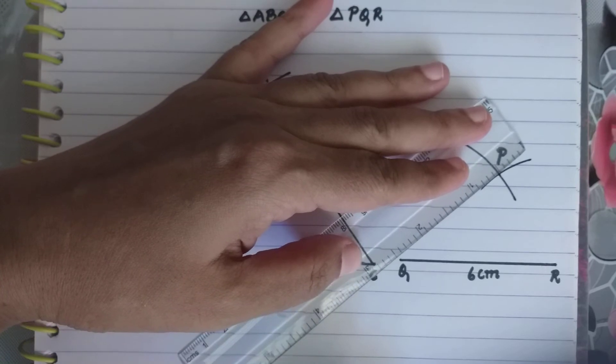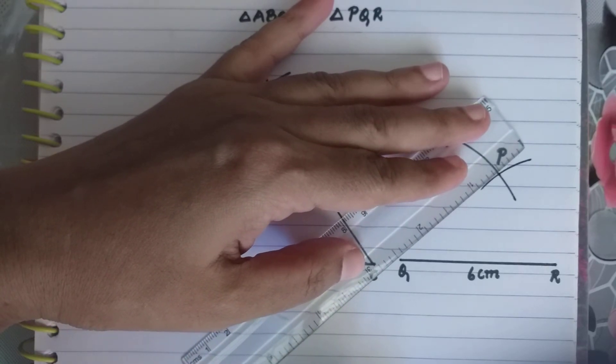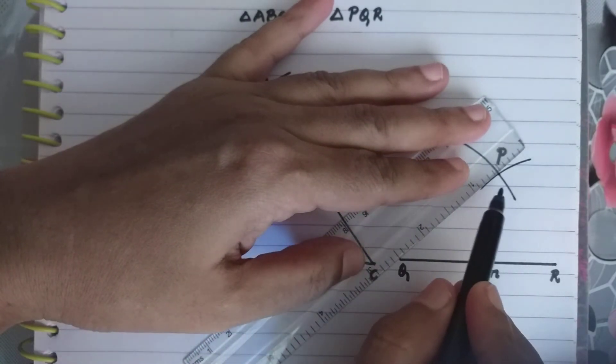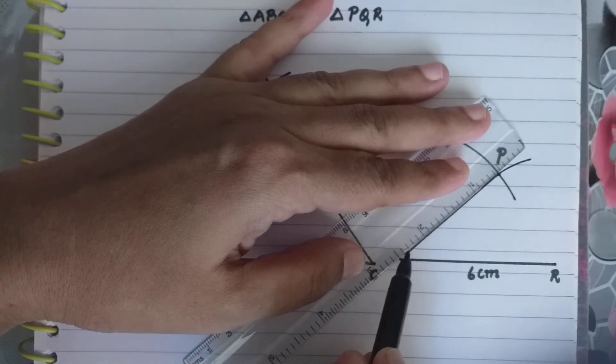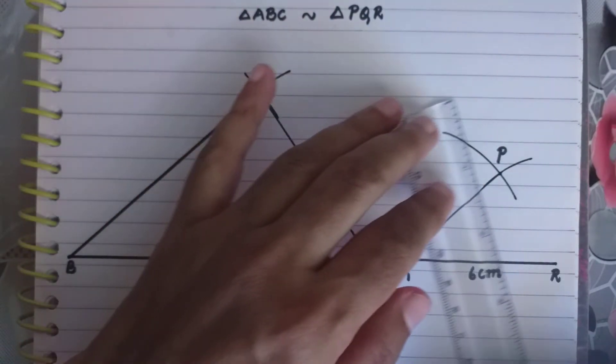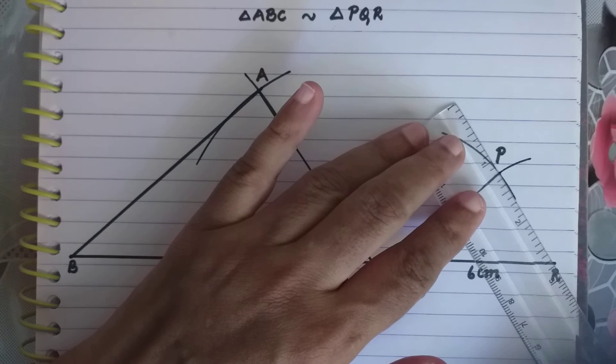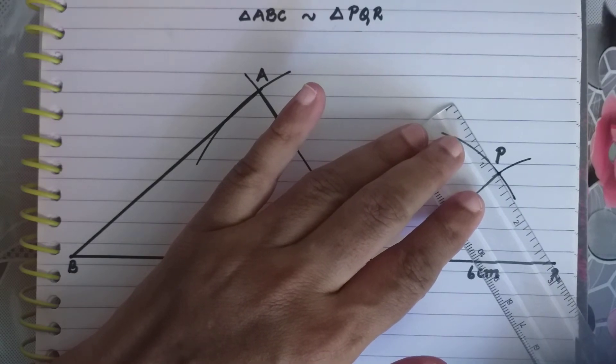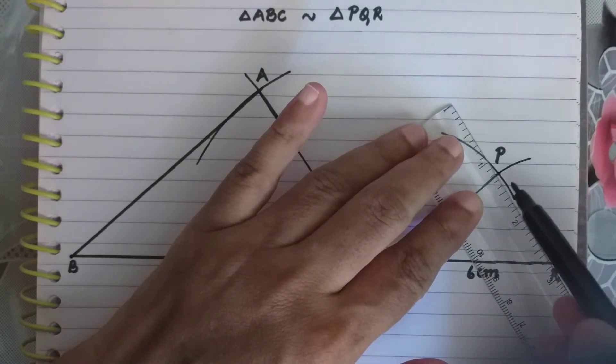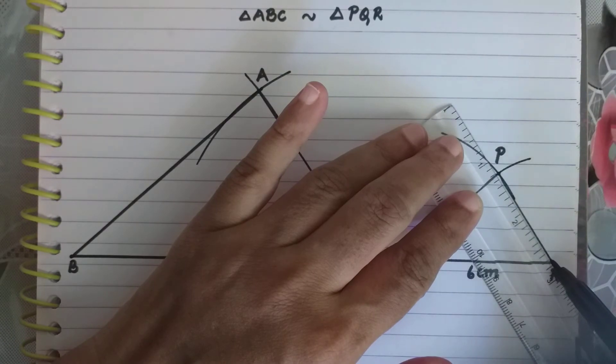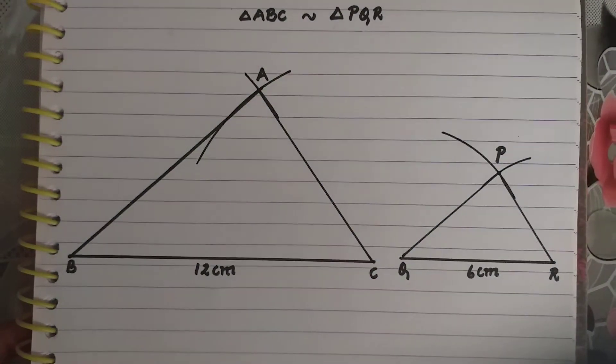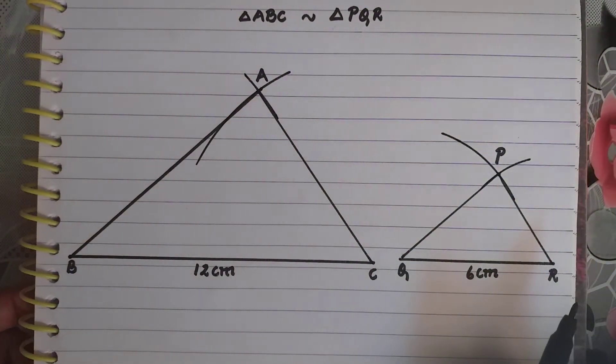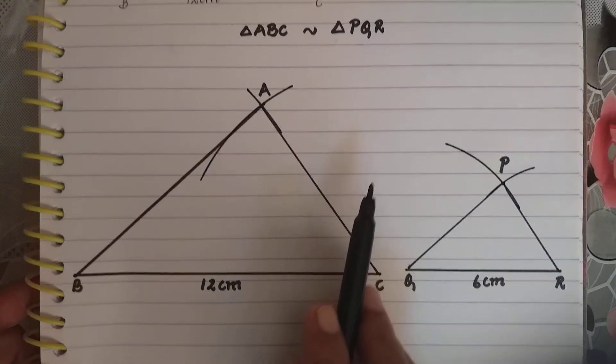Now I will mark this point as P. QR is already there. And I join P to Q and P to R.